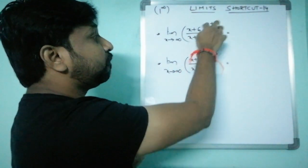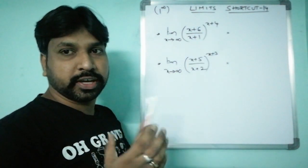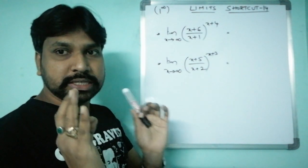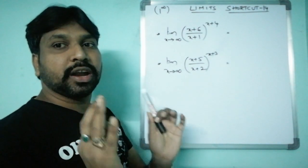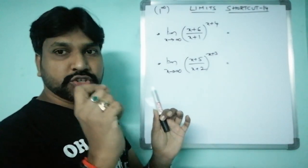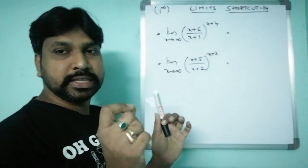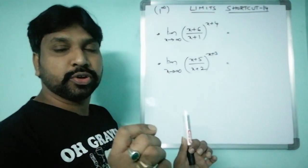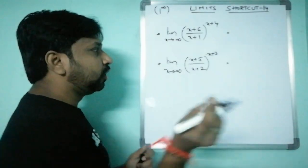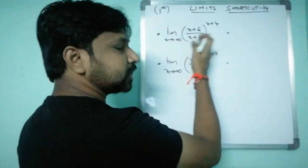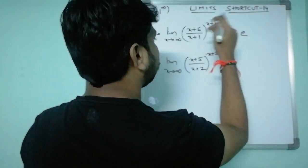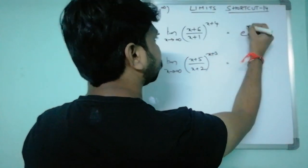Since we have 1^∞ form, we can apply the shortcut formula. This formula lets you crack the answer within one second. The answer here is e^5.